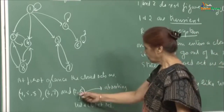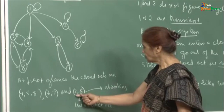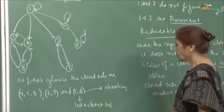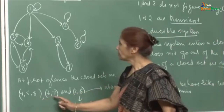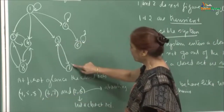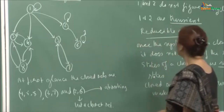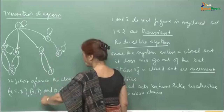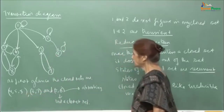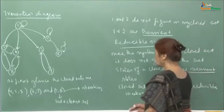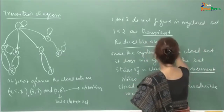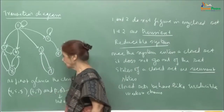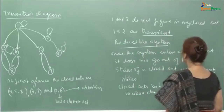Since 6 is absorbing, {2, 6} is not a closed set — for a closed set they must both communicate, but there is no arc from 6 to 2. So the two closed sets are {4, 5, 8} and {3, 7}. States 3 and 7 communicate via arcs in both directions. States 1 and 2 do not figure in any closed set, so they are defined as transient. Since there is more than one closed set, this is a reducible system.